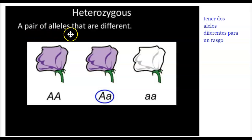Heterozygous, a pair of alleles that are different. In this example, this flower is heterozygous. It has two different alleles, a capital A and a lowercase a.